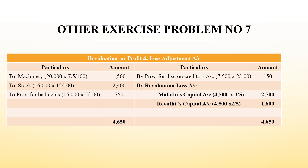Now we are preparing the revaluation account, also called the profit and loss adjustments account. If an asset's value decreases, it goes on the debit side. That we have done. On the credit side, if an asset's value increases, it goes on the credit side. So provision for discount on creditors - whatever is posted in the journal entry is also posted in the ledger. All expenses come on the debit side; income or amounts coming into the business go on the credit side. After balancing, that is 4,500 rupees, which is then split between Malathi and Revathi's capital accounts in their profit sharing ratio.